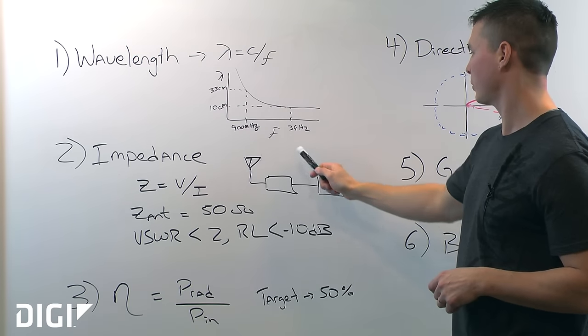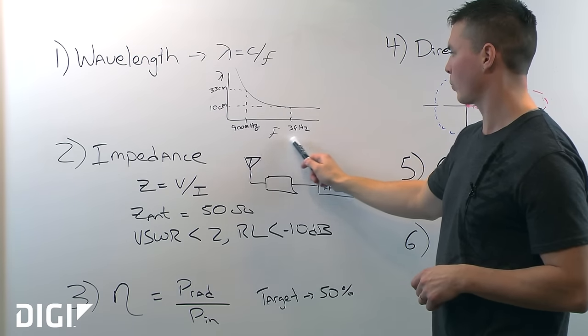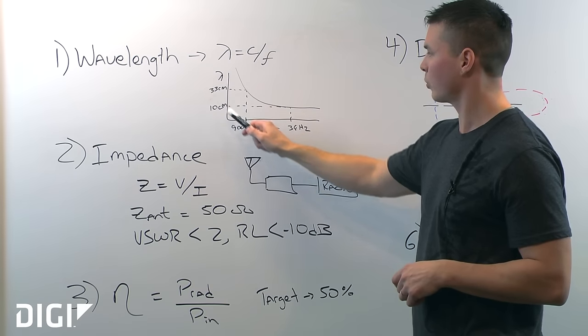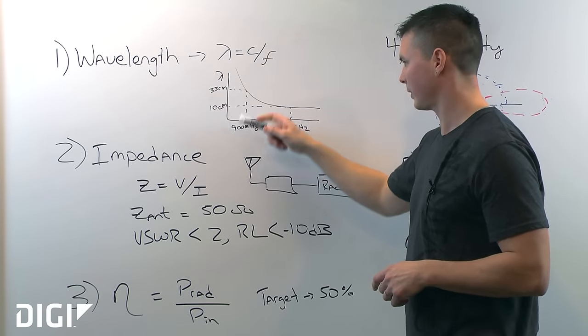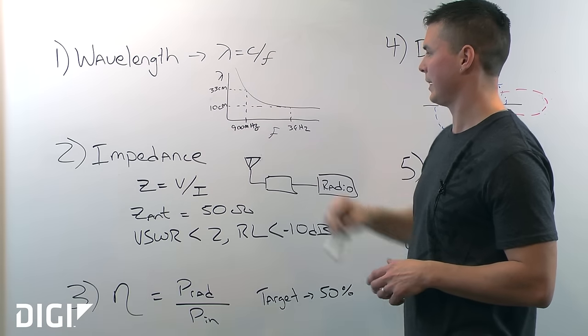I have a couple examples here. At 3 gigahertz your wavelength is 10 centimeters and at 900 megahertz your wavelength is 33 centimeters. So as your frequency is decreasing, your wavelength is increasing.